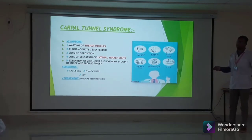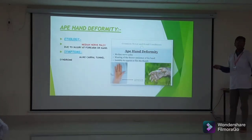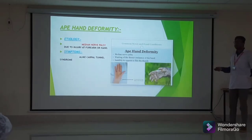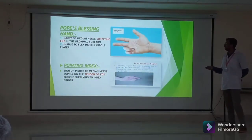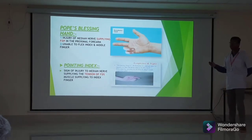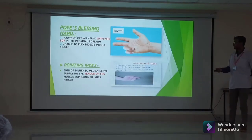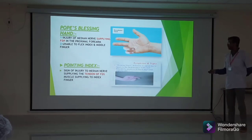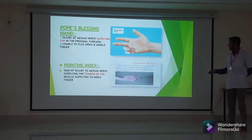Treatment is usually surgical decompression of the median nerve. The ape hand deformity is median nerve palsy due to injury at a higher level, with symptoms similar to carpal tunnel syndrome. The pope's blessing hand or benediction sign is caused by injury of the median nerve supplying flexor digitorum profundus in the proximal forearm, making the person unable to flex the index and middle fingers. The pointing index is a sign of injury of the median nerve supplying flexor digitorum superficialis to the index finger.